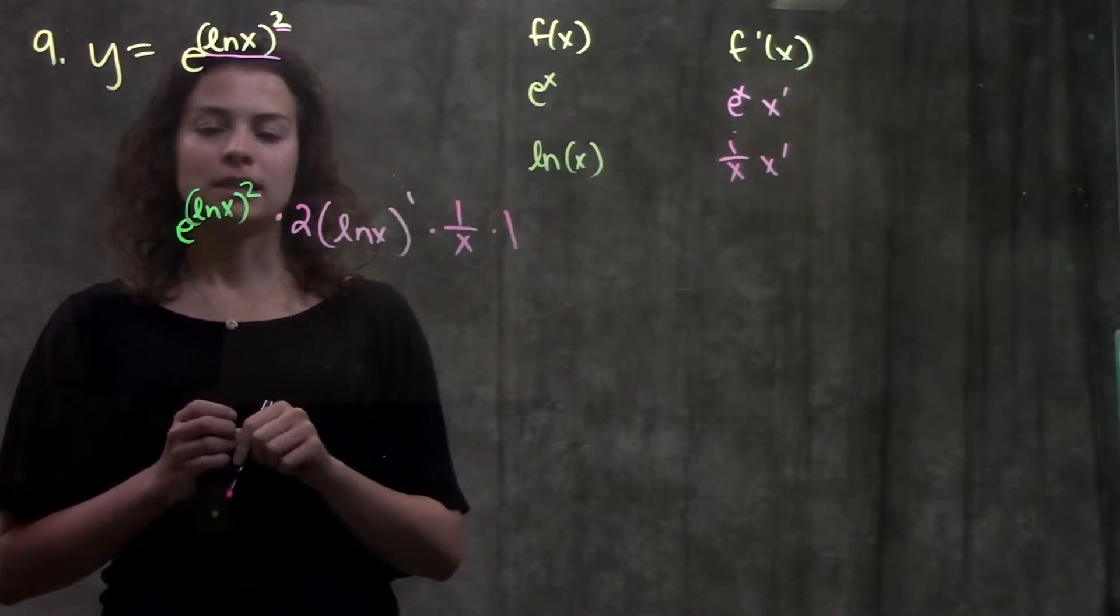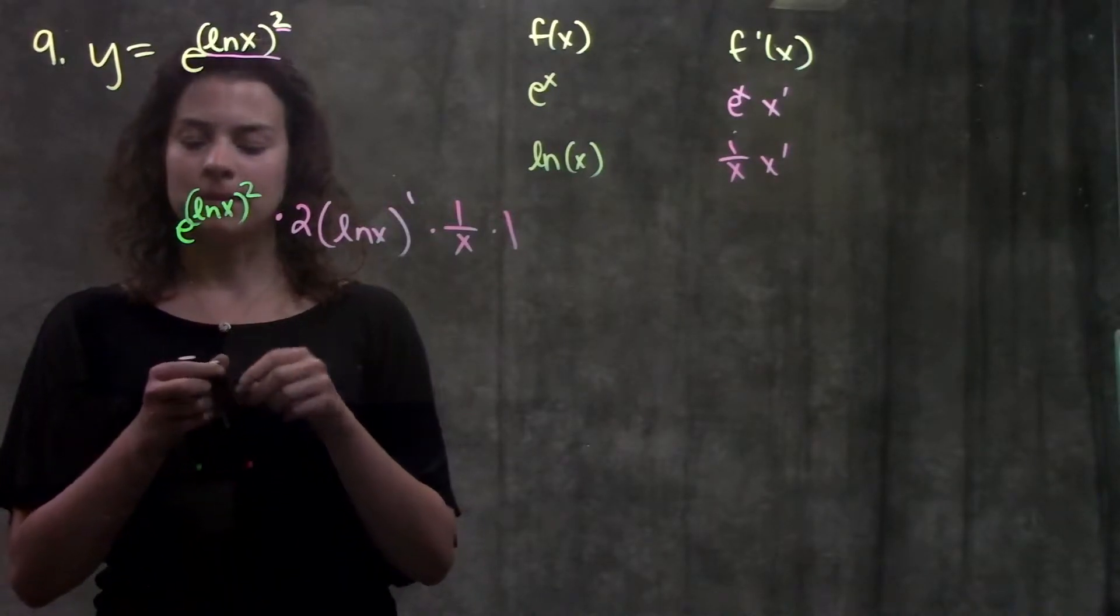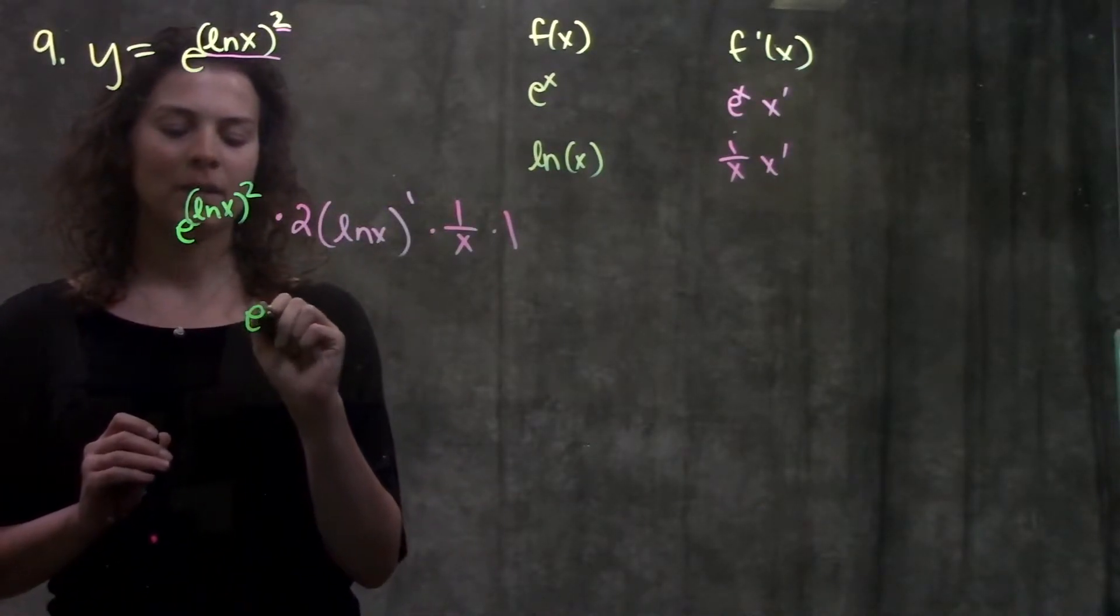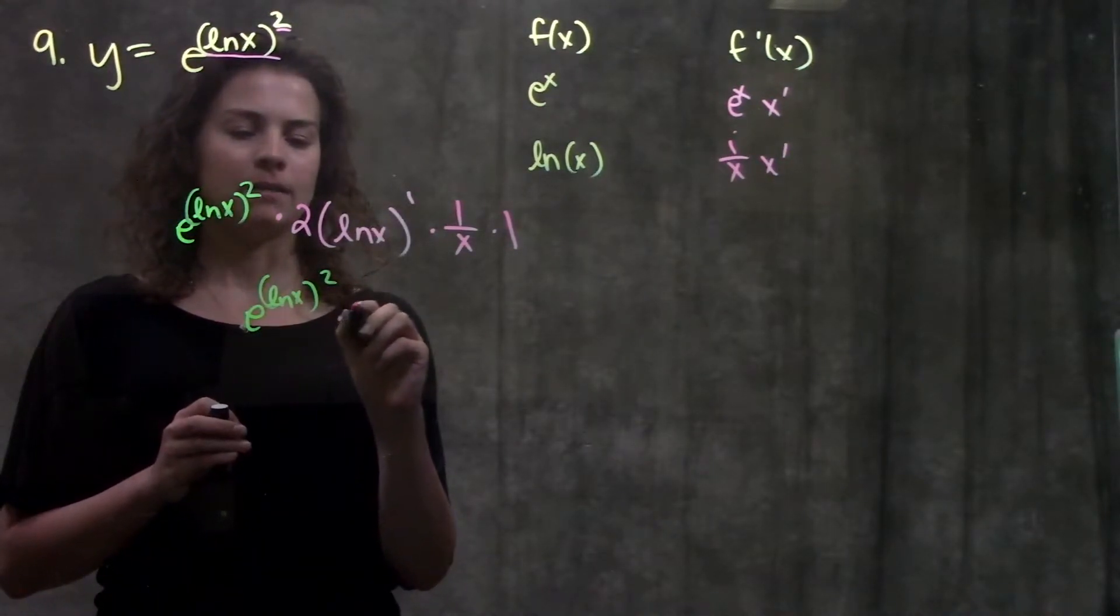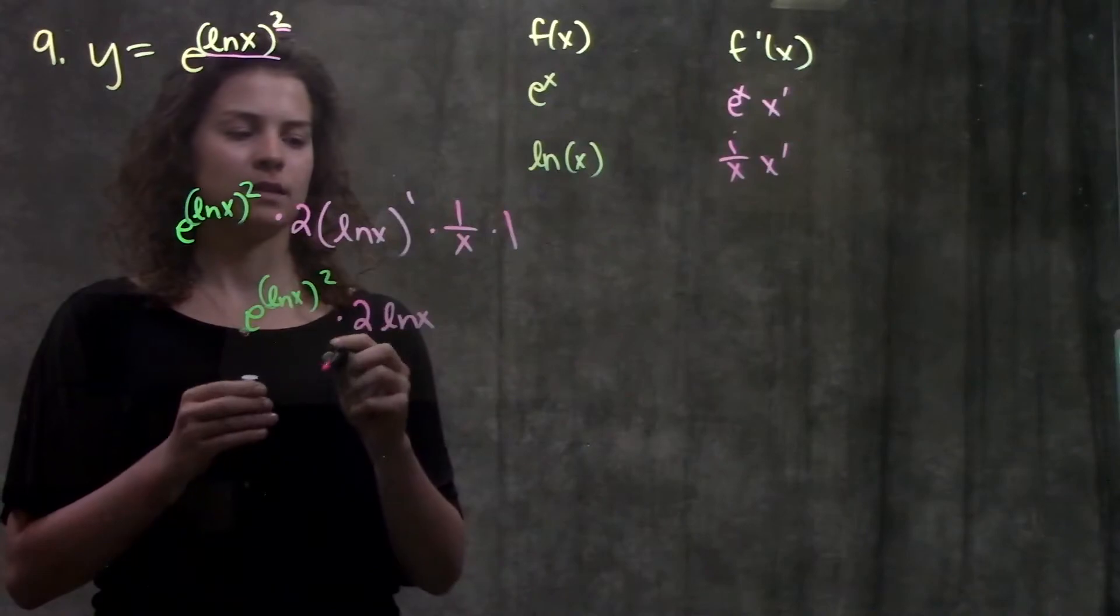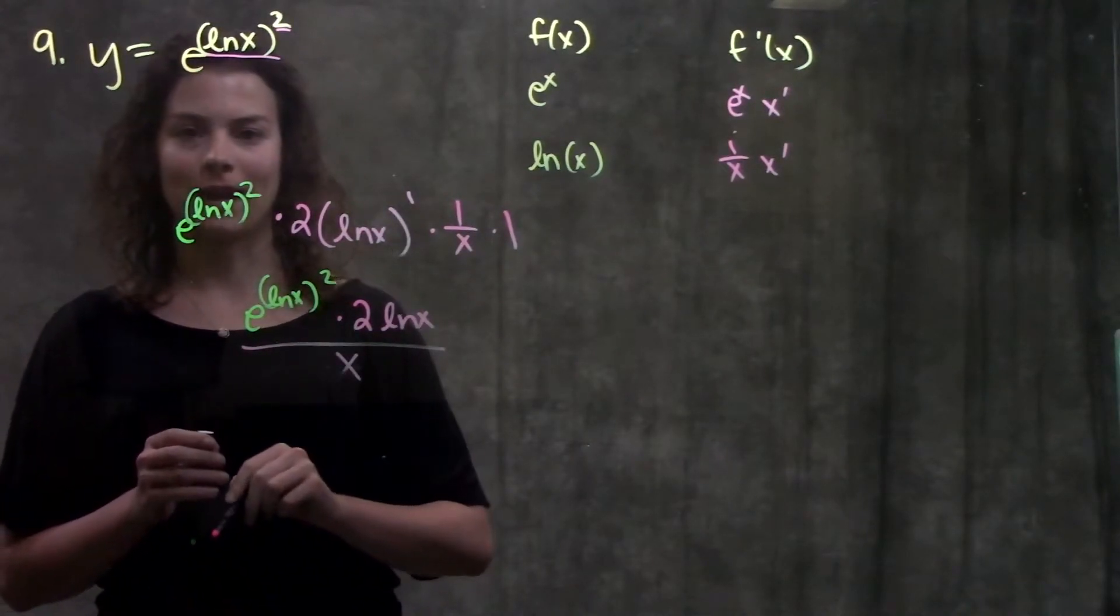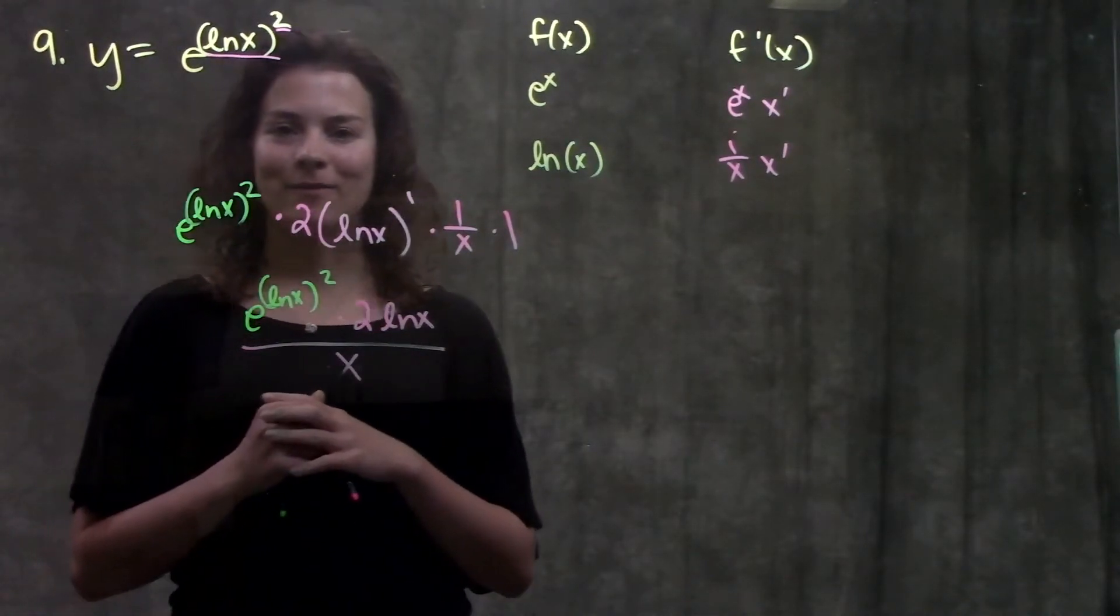Alrighty, and that's about it for this problem. Let me simplify it a little bit so it looks a little cleaner. This is e to ln x squared times 2 ln x all that over x. And that's about it for this problem.